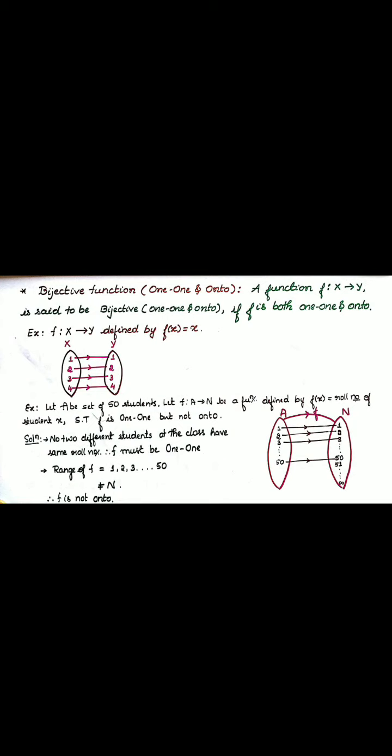So it is a one-one function. Now I am checking onto function. If you map up to 50, then from 51, 52 up to infinity, the elements have no pre-image in the domain.